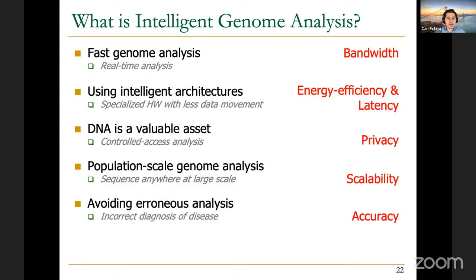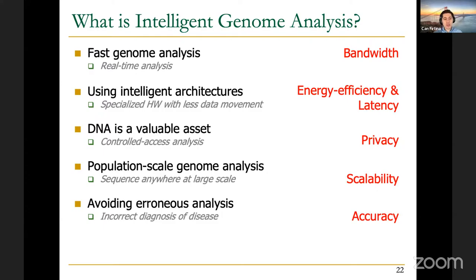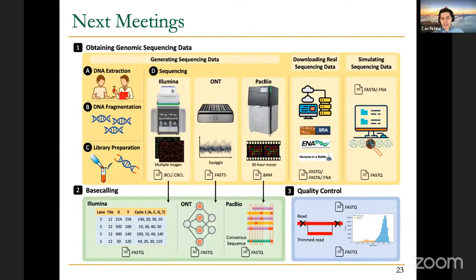Probably one of the most important directions is to avoid erroneous analysis so that we can achieve accurate genome analysis. If you achieve really fast genome analysis but the result is wrong, it's useless. So it's really important to have both good accuracy and fast genome analysis so that we can make a good and quick decision. All of these directions are very important to achieve, and your project is essentially going to cover one or more of these directions so that we can achieve intelligent genome analysis. In the next lectures, we're essentially going to be covering the basics of genome analysis.